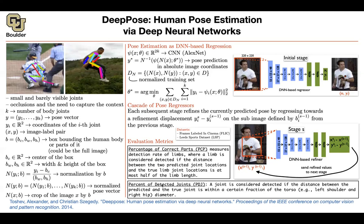Another metric uses a threshold: a joint is considered detected if the distance between the predicted and true joint is within a threshold of the torso size. The torso is defined as the distance between the left shoulder and the right hip, and it's also the reference used to define the bounding boxes for subsequent stages.